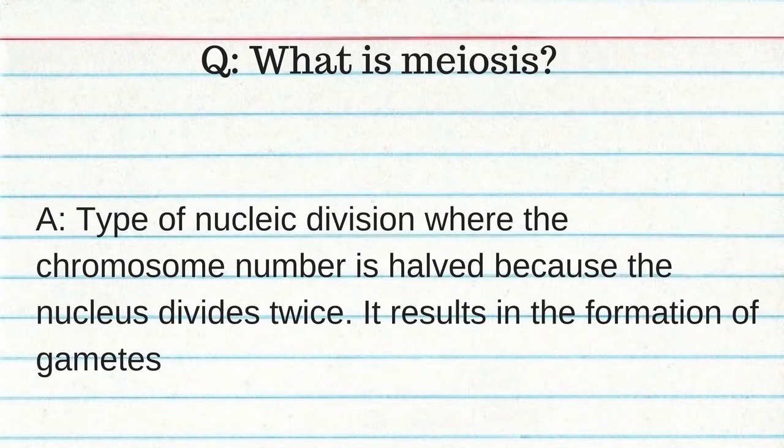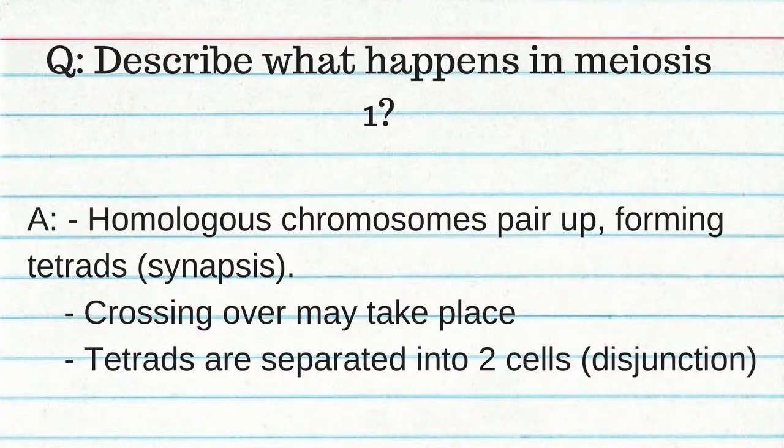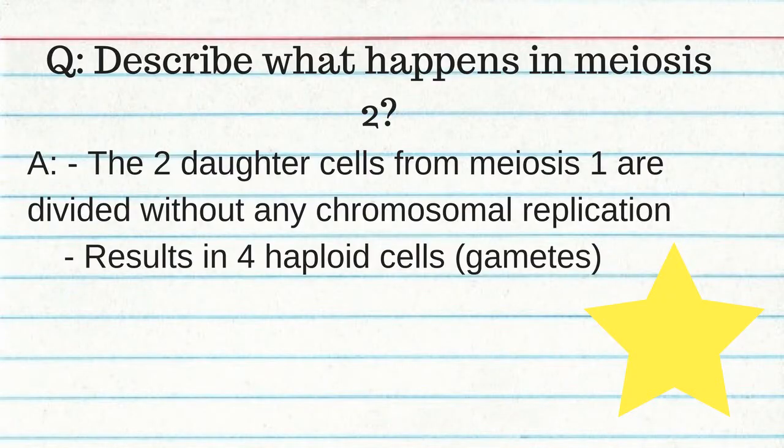Binary fission: one organism divides into two equal parts — occurs in bacteria. Vegetative propagation involves taking part of a plant to grow a genetically identical plant. Meiosis is a type of nuclear division where the chromosome number is halved because the nucleus divides twice, resulting in the formation of gametes — which are sex cells. The two main stages are meiosis I and meiosis II. In meiosis I, homologous chromosomes pair up forming tetrads in a stage known as synapsis; crossing over may take place, and the tetrads are separated into two cells in a process known as disjunction. In meiosis II, the two daughter cells are divided without chromosomal replication, resulting in four haploid cells — gametes.